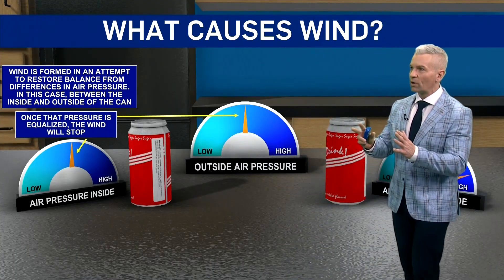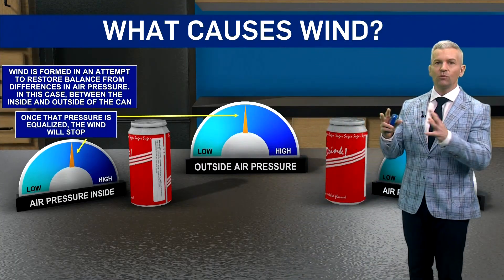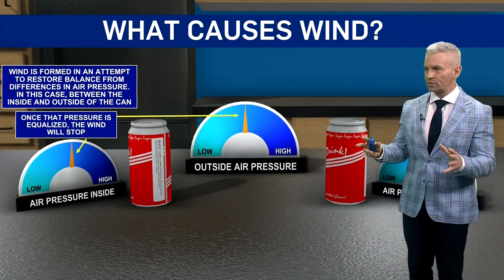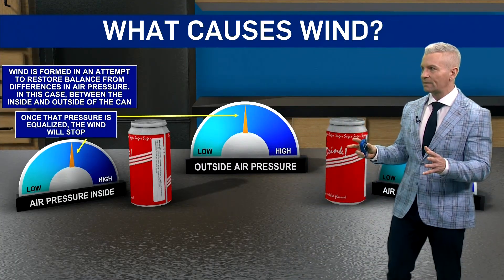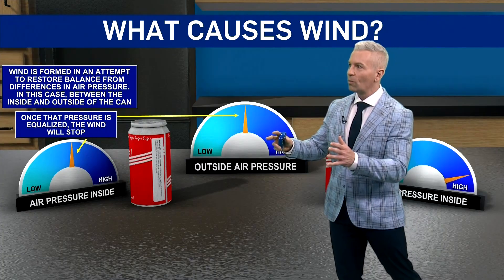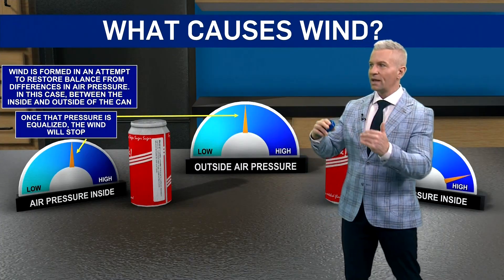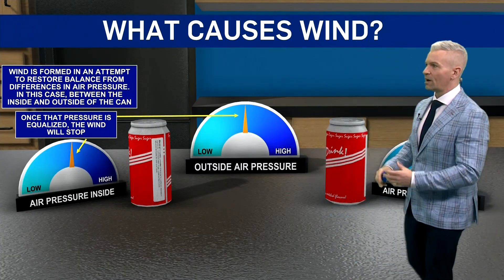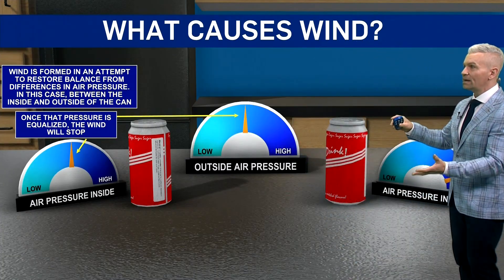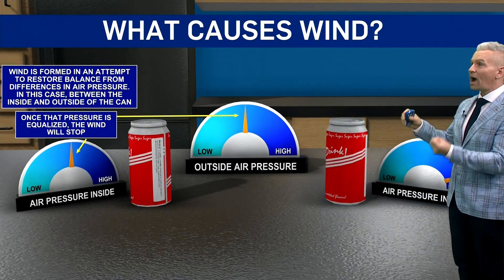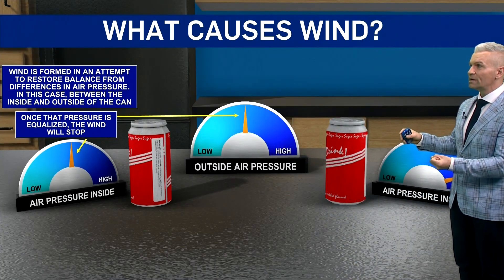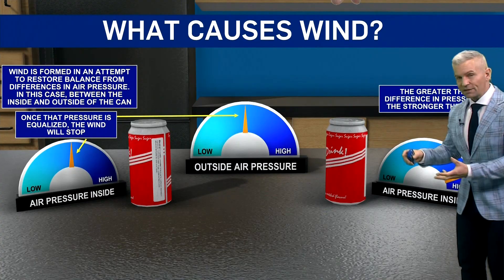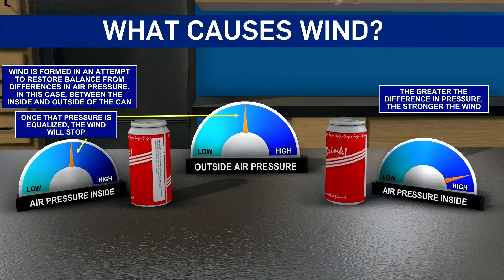It's trying to restore balance, equalize the pressure between the can and the atmosphere. Once that happens, that wind dies down. And if you have a can that has even higher pressure, the difference will create more of a wind.